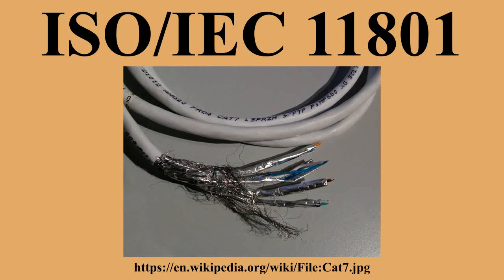Edition 3, currently being prepared by ISO/IEC JTC1 SC25, Interconnection of Information Technology Equipment, is a major revision of the standard which will unify several prior standards for commercial, home, and industrial networks, as well as data centers, and define requirements for generic cabling and distributed building networks. The new series of standards will include six parts.